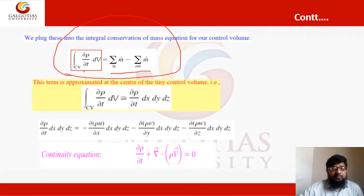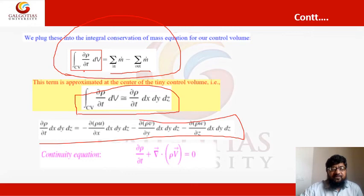By approximating for a small control volume, this equation can be written as this. And by adjusting the terms and introducing del operator, we can write the continuity equation: del rho by del t plus del dot rho V vector equals to zero, where V is the velocity vector.